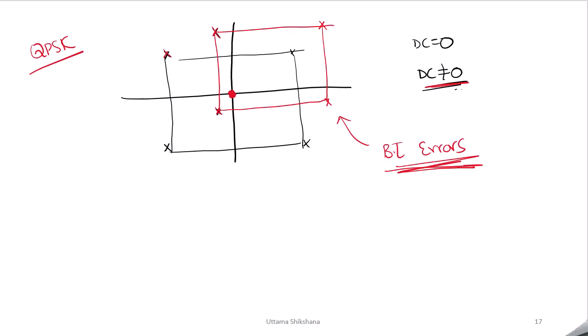If we take QPSK as well, the four ideal constellation points are equidistant from the origin, but in the presence of DC they get shifted to different positions. With such a shifted constellation diagram in the presence of DC, there will definitely be many bit errors and we are going to demodulate incorrectly.